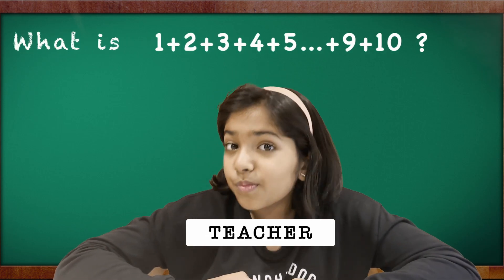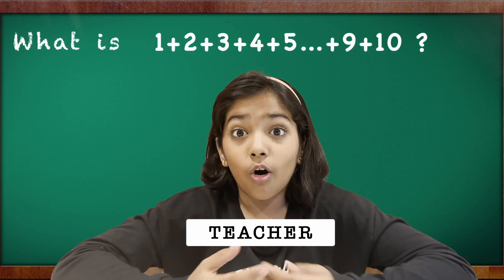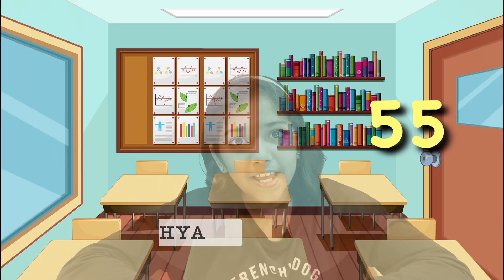What is 1 plus 2 plus 3 plus 4 plus 5 all the way up to 10? Hmm... 55. Wow! Not bad.